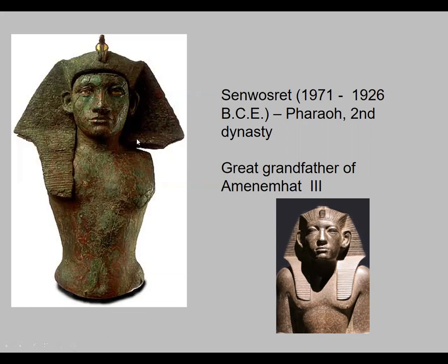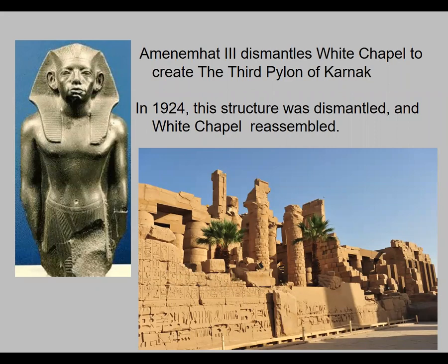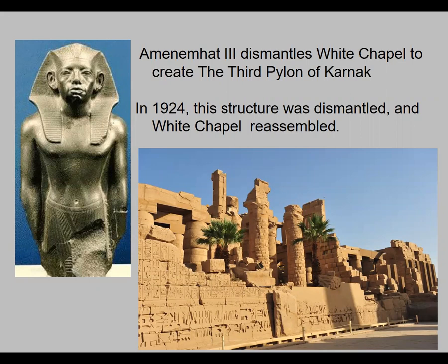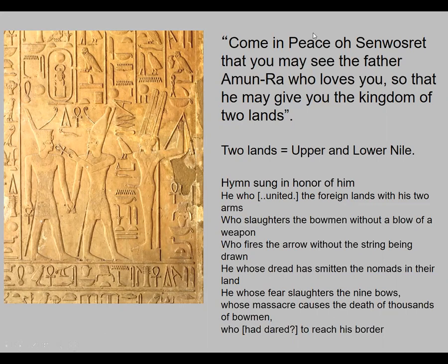Senusret is the great grandfather of Amenemhat III, the person who dismantled the White Chapel. He took all those relief sculpture pieces and built the third pylon of Karnak. Archaeologists found all this material and somehow knew what went where, and they reassembled the White Chapel. Senusret united the upper and lower Nile, and the inscription describes him as violent: 'He who united the foreign lands with the two arms, who slaughters the bowmen without a blow of a weapon, who fires the arrow without the string being drawn.'